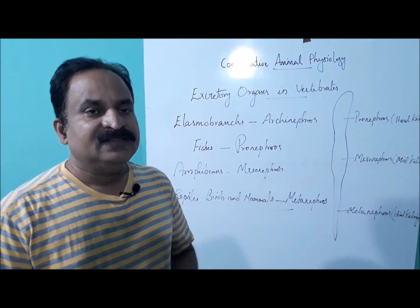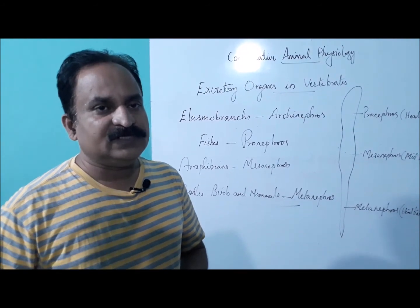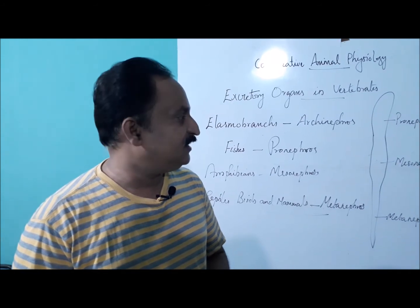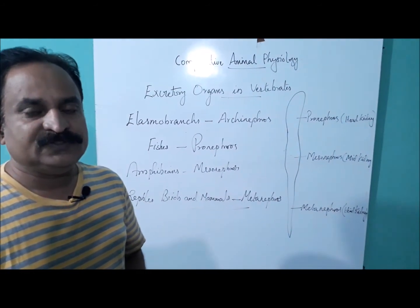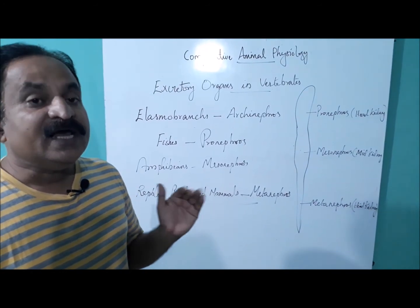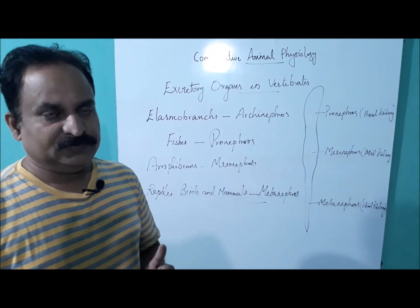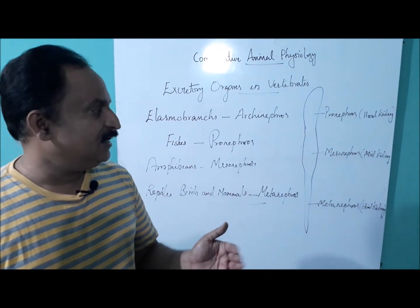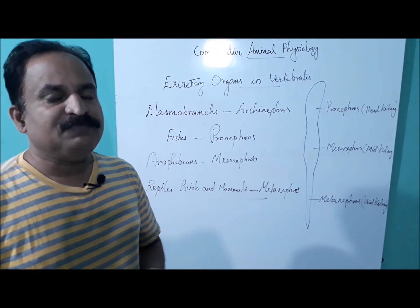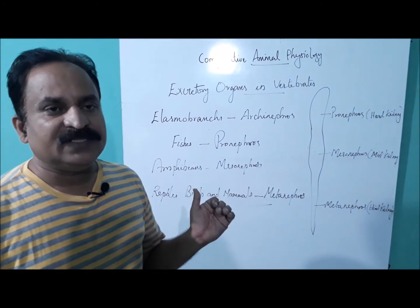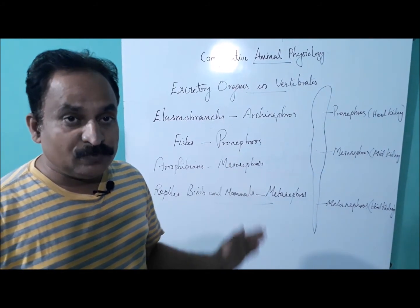In fishes, the kidney is a tubular structure which runs through the dorsal part of the body and having three regions: pronephrose, mesonephrose, and metanephrose. In elasmobranch fishes, the kidney is called archynephrose. But in bony fishes, it is called pronephric kidney. That means there are three divisions for the kidney: head kidney, mid kidney, and hind kidney. It is in tubular form.